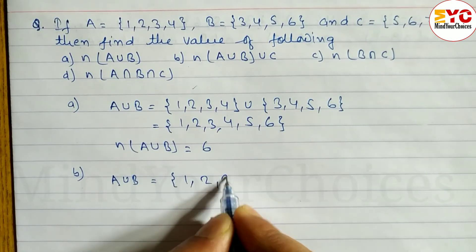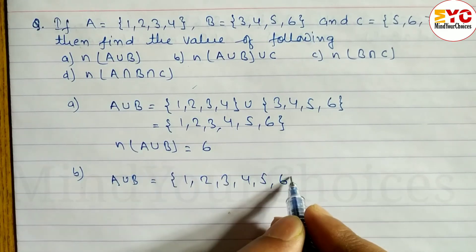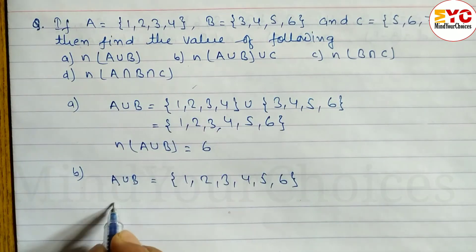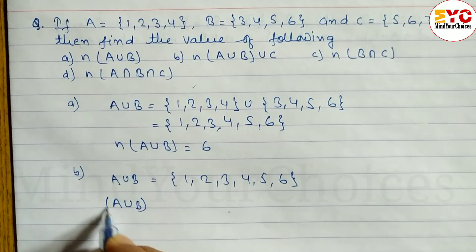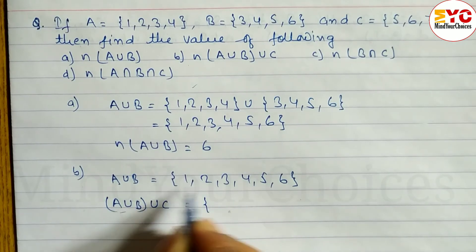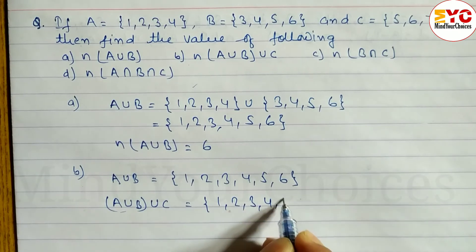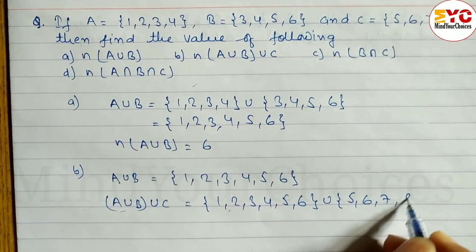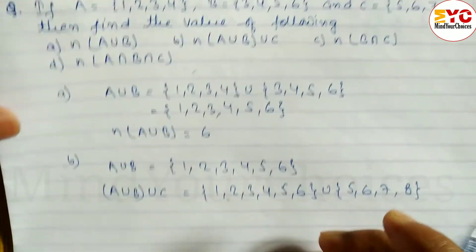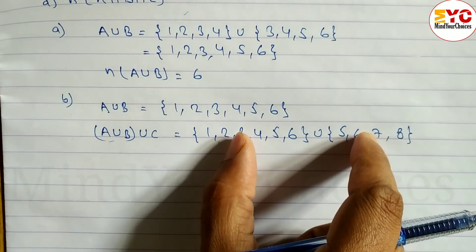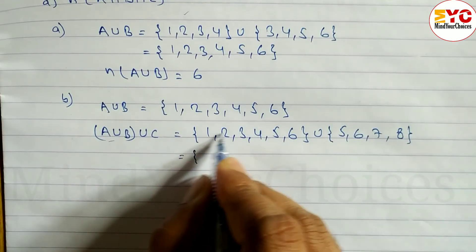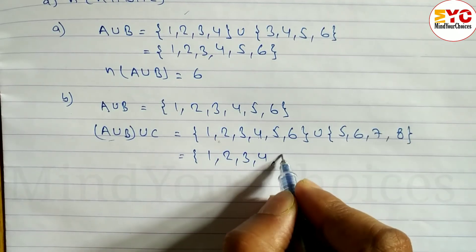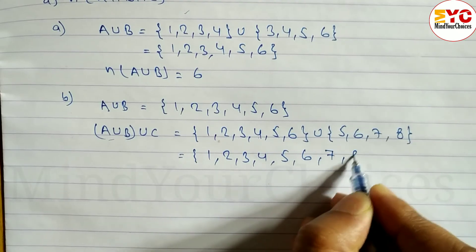So I will write directly: {1, 2, 3, 4, 5, 6}. Now I will find A∪B∪C. We write A union B union C: {1, 2, 3, 4, 5, 6} union C. Set C is equal to {5, 6, 7, 8}. Union means all the elements from both sets, so we take: 1, 2, 3, 4, 5, 6, 7, 8.